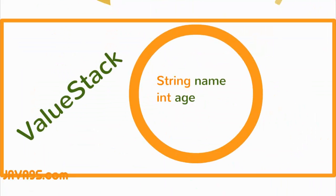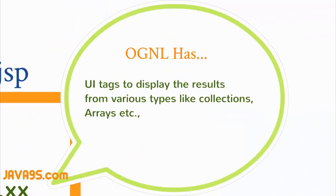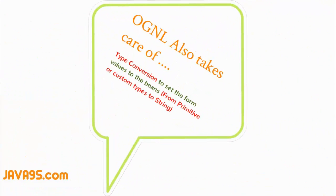This bean is referred to on the value stack. Beyond type conversion, OGNL offers form tags so you can specify which form value maps to which property of a Java bean. OGNL provides many form tags and UI-related tags to iterate through collections and arrays and display different types of elements. OGNL not only converts form values to Java types, but also converts Java types back to strings when the response is sent, handling the complete conversion cycle.